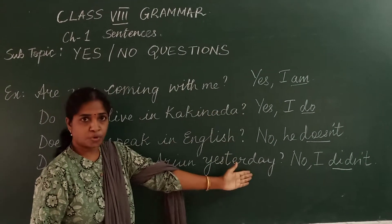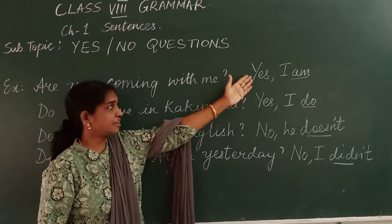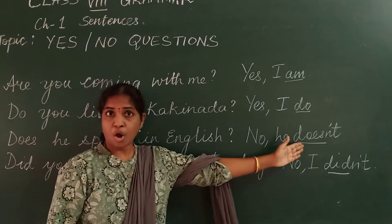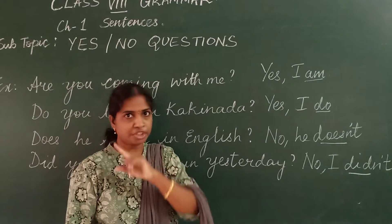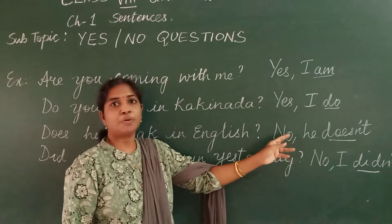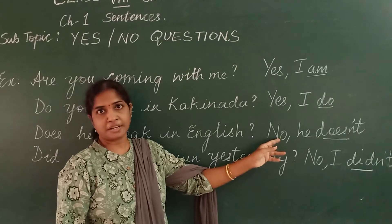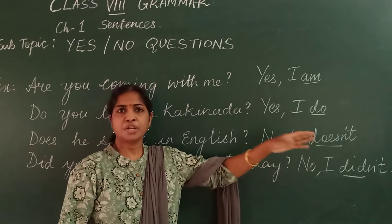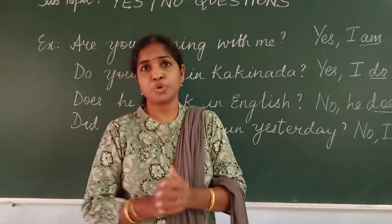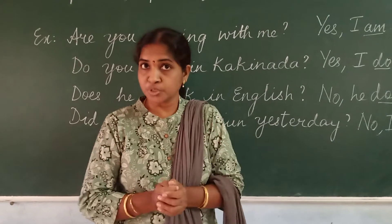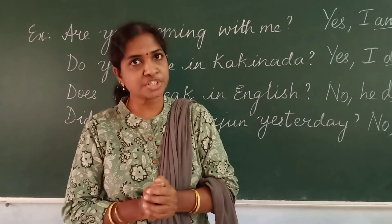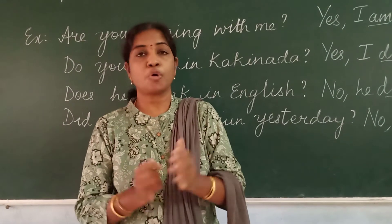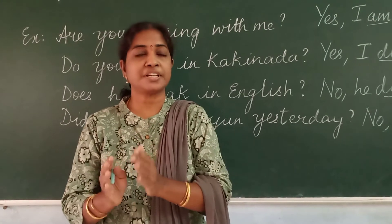Yes or no — if it is positive, you say yes and the auxiliary. And if it is negative, you say no and the auxiliary. And one more thing you need to remember, children: when you are giving a negative answer, you need to use the verb in contracted form. So, why are these yes or no questions used? They are used either for seeking information, for confirmation, or knowing your opinion — whether it is a yes or whether it is a no.